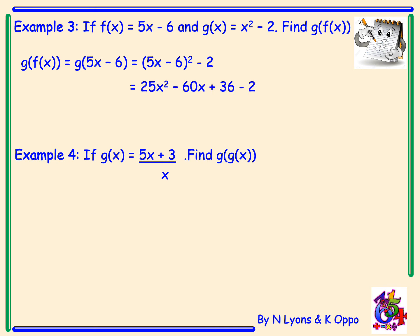Expanding the bracket will give an answer of 25x squared minus 60x plus 36. And we've got our minus 2 at the end, which simplifies down to give a final answer of 25x squared minus 60x plus 34.